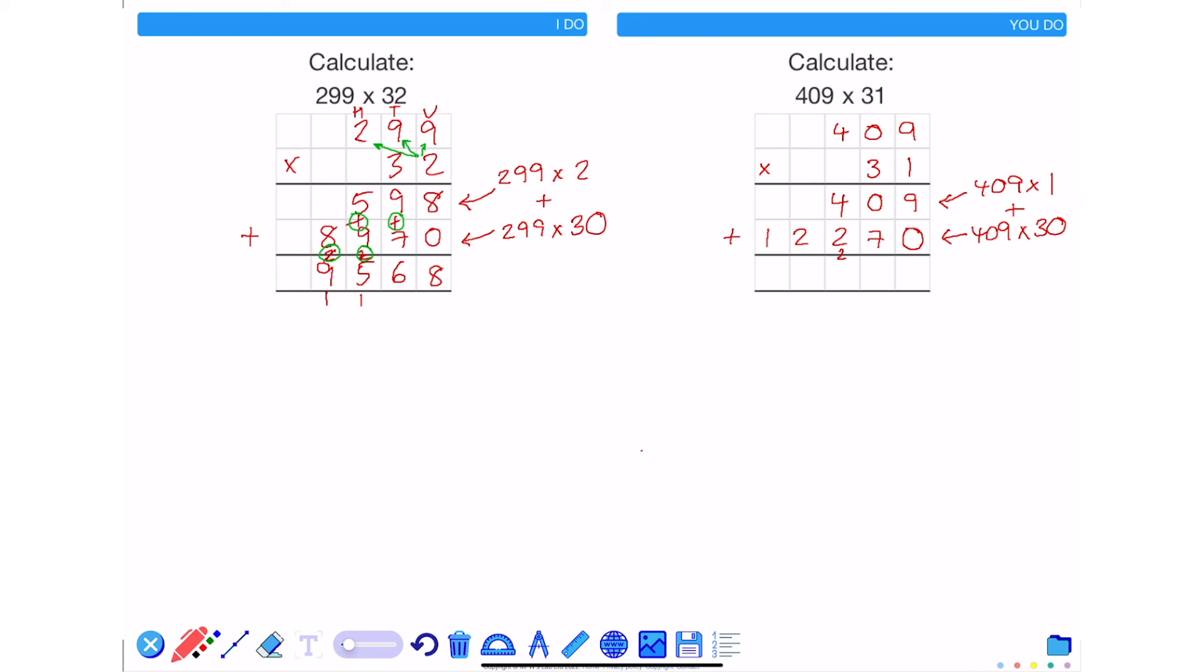So adding all of this together gives me 9, 7, not adding on the 2 because that was a carry-on number, 4 add 2 is 6, 2 and 1. The answer to 409 times by 31 is 12,679.